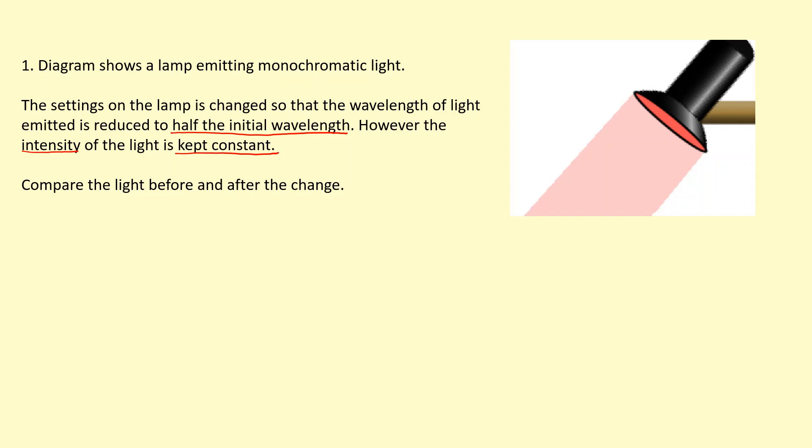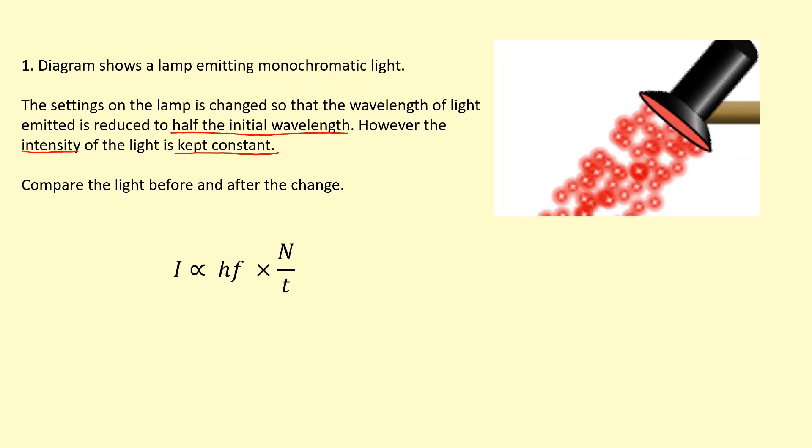So to understand this we need to look at the light in terms of photons again and we know the intensity depends on the energy of each photon and the number of photons emitted per unit time. So here we're halving the wavelength. So it's better to write this equation instead for energy of the photon: hc over lambda.